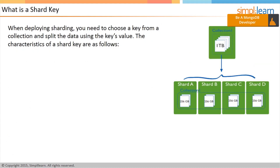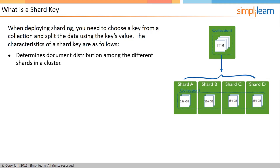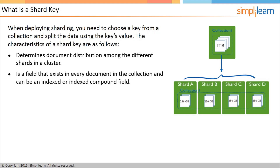When deploying sharding, you need to choose a key from a collection and split the data using the key's value. This key is called a shard key, which determines how to distribute the documents of a collection among the different shards in a cluster. The shard key is a field that exists in every document in the collection and can be an indexed or indexed compound field. MongoDB performs data partitioning in a collection using different ranges or chunks of shard key values. Each range or chunk defines a non-overlapping range of shard key values.